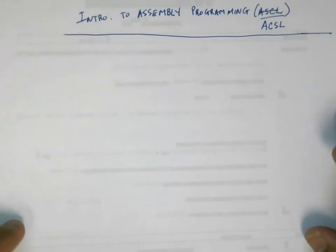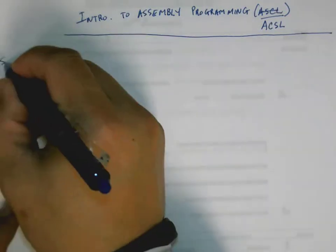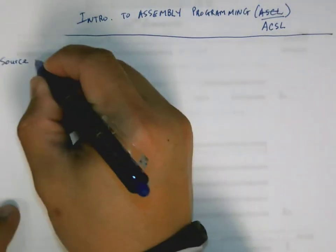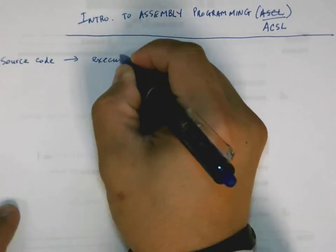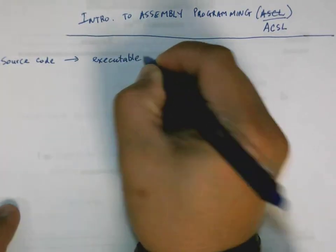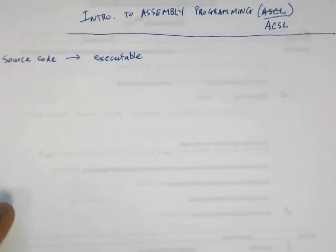The first thing I want to talk about is the process that goes from source code to executable. There's actually a lot of things going on here when you compile and try to run source code. Let me sketch this out and then we'll talk about it.